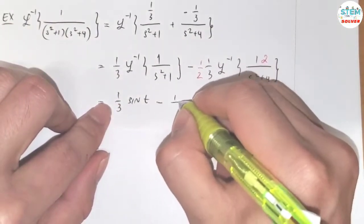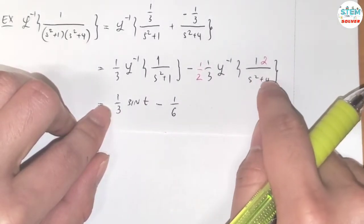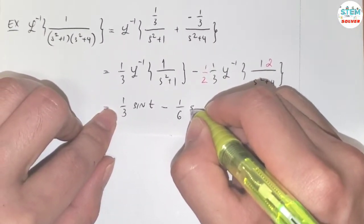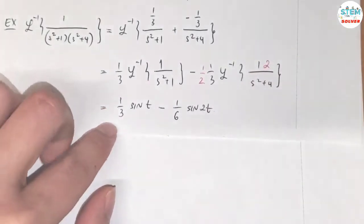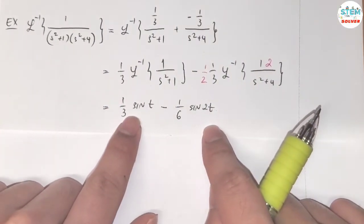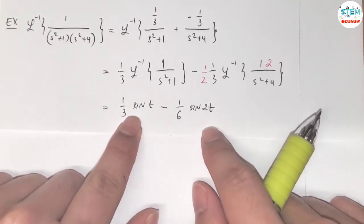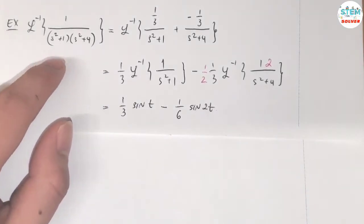So I have negative 1 over 6 times L inverse of 2 over x squared plus 4 is equal to sine of 2t. So this is your final answer. If you're not sure, you can take the Laplace transform of this and this. Then it should give you back to this one, so that's how you check your answer. That's it.